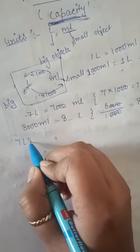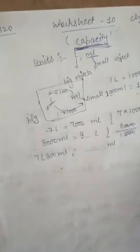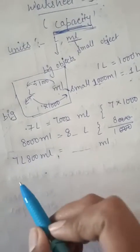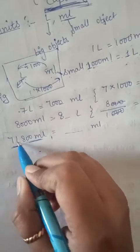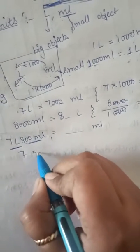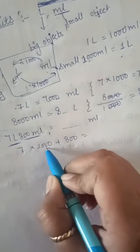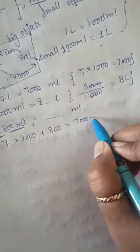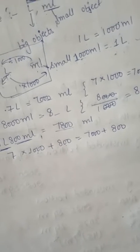If it comes like this: seven liters and eight hundred milliliters, and you have to convert this into milliliters — first convert liters into milliliters by multiplying by one thousand, then add the milliliter part. Seven multiplied by one thousand is seven thousand, plus eight hundred equals seven thousand eight hundred milliliters.